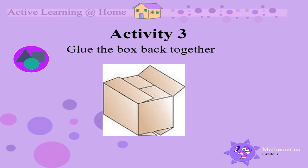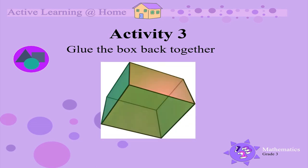Now glue the box back together. When you glue the box together, you make a 3D object from a 2D shape. Now let's talk about the box. It is not a flat shape — it is a 3D object.